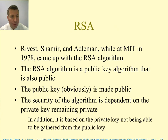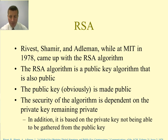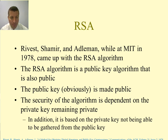One of the most popular public key algorithms is RSA, which stands for the names of three researchers — Rivest, Shamir, and Adleman — who created it at MIT in 1978. RSA is a public key algorithm where the public key is made public to everyone, and its security depends on the private key remaining private. It has been in existence for over 30 years and no one has been able to crack the algorithm.